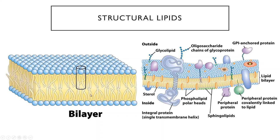The lipids that make up the bilayer are not attached to each other — there's no covalent linkage between any of these molecules. They're held together by hydrophobic interactions and polar interactions with water. They're all free to move around within the bilayer, as are all the proteins and other molecules embedded in the membrane, unless they are anchored to something such as the extracellular matrix or the cytoskeleton.